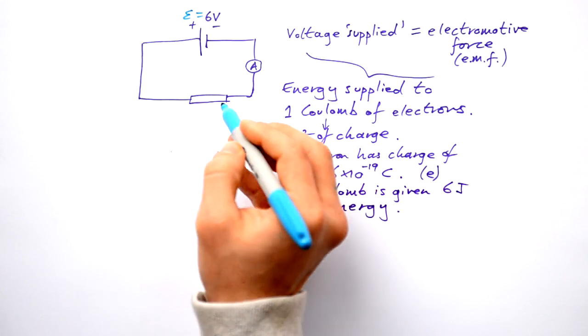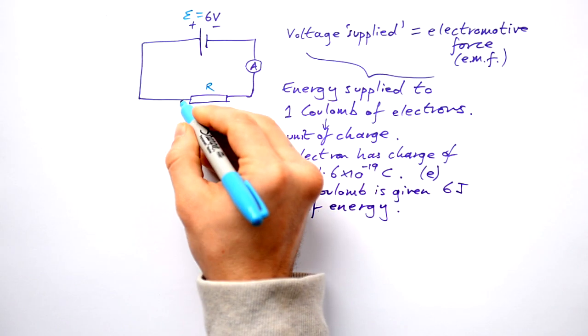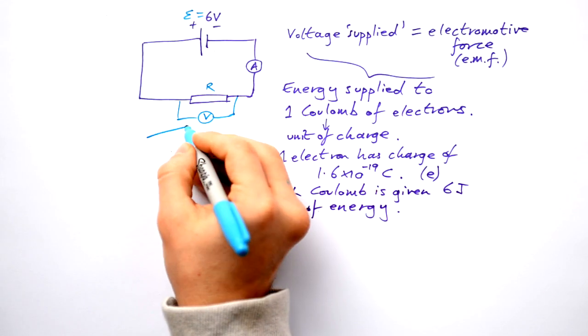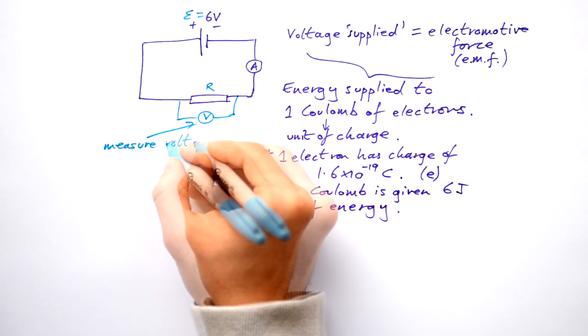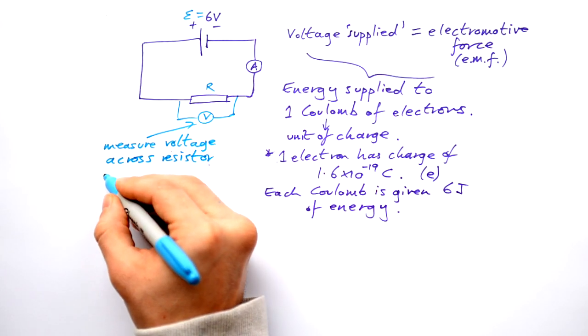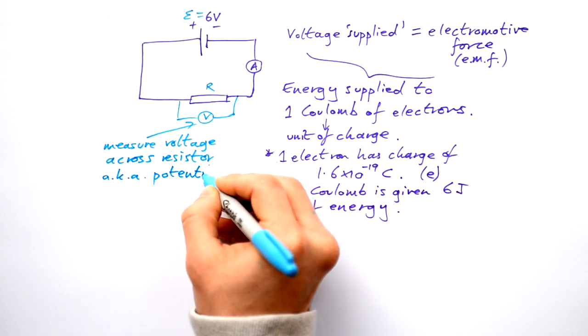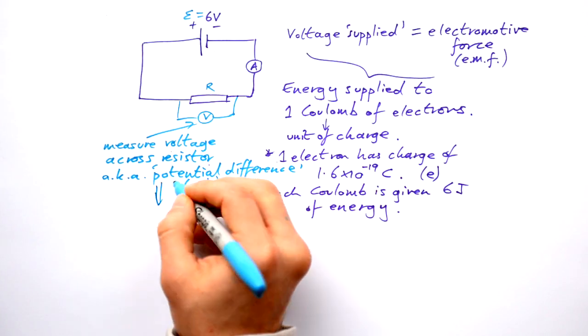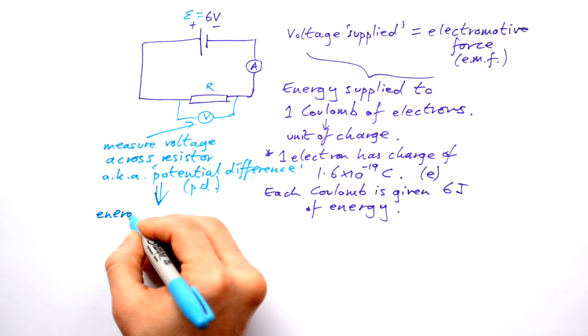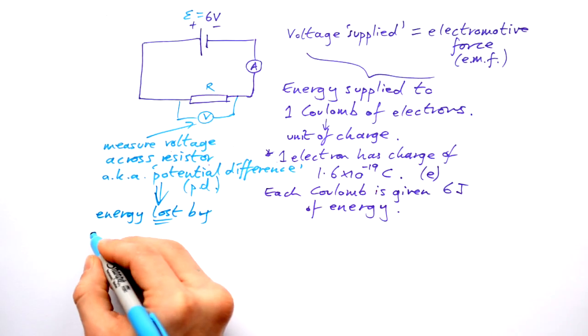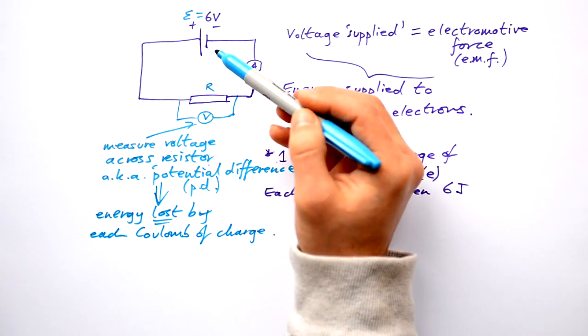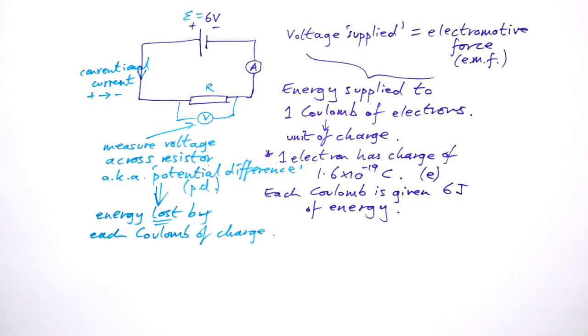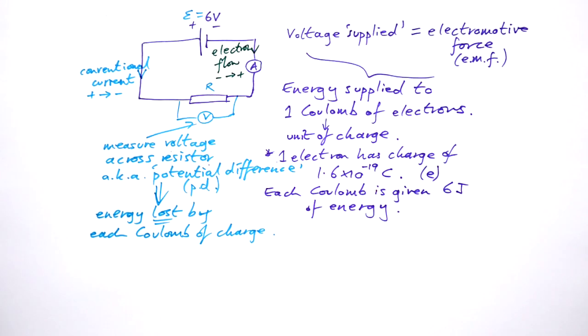What about if I wanted to find out how much energy they lose when they go across this resistor? Here, I'm going to call that R and I need a voltmeter. Voltmeters are always put across a component. That way it can measure what we call voltage across resistor. That's also known as potential difference, PD for short. And this measures the energy lost by each coulomb of charge. So the electrons travel from here. We do say that current, conventional current, goes around there. Conventional current goes from positive to negative, but actually electrons flow in the opposite direction.